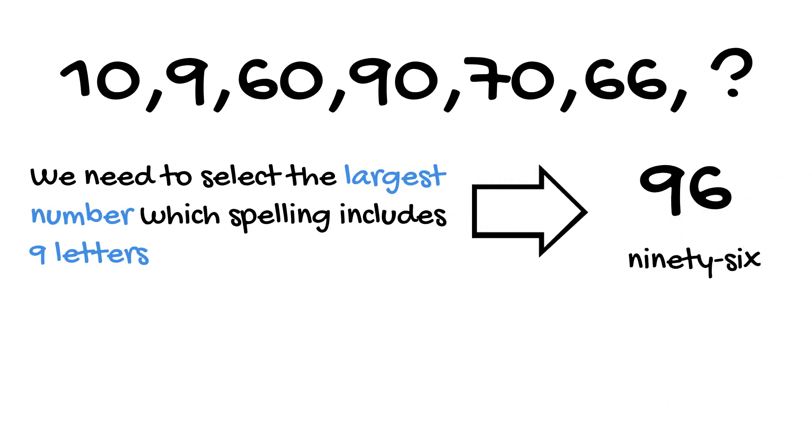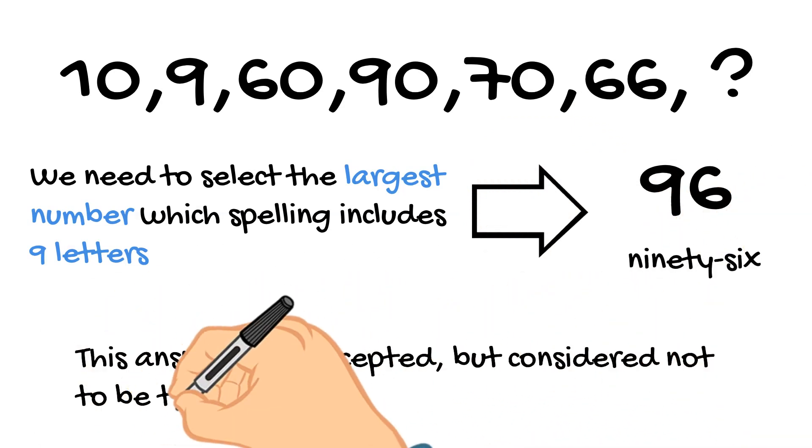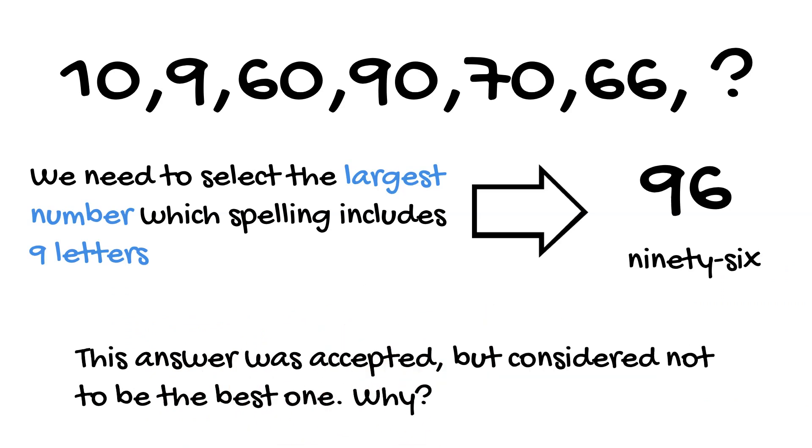However, the number was accepted but considered to be not the best one. Now, knowing the logic, stop the video and think why Google considers this number as not the best option even though the logic is correct.